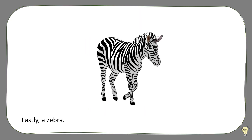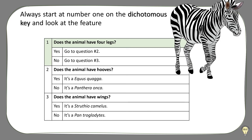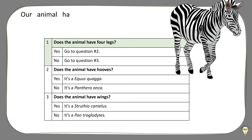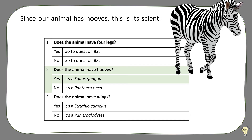Lastly, a zebra. Always start at number 1 on the dichotomous key and look at the features of the organism you are trying to identify. Our animal has 4 legs, so we move to question number 2. Since our animal has hooves, this is its scientific name.